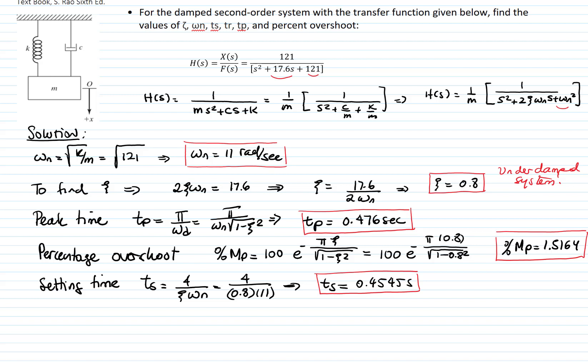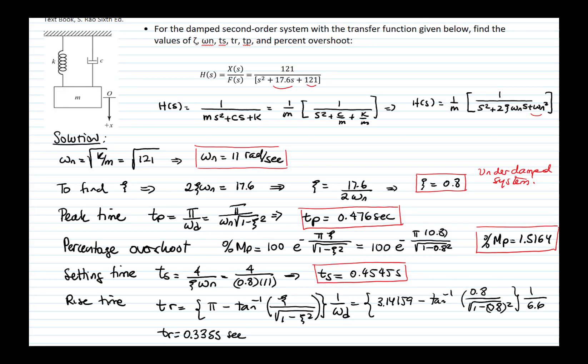And the rise time is the time where the response reaches 90% of the response. And it's this equation right here that you have in your theory slides. And if we plug all these values, pi as 3.14159, the tangent of zeta over square root of 1 minus zeta squared, all that divided by omega d, the rise time is equal to 0.3355 seconds.